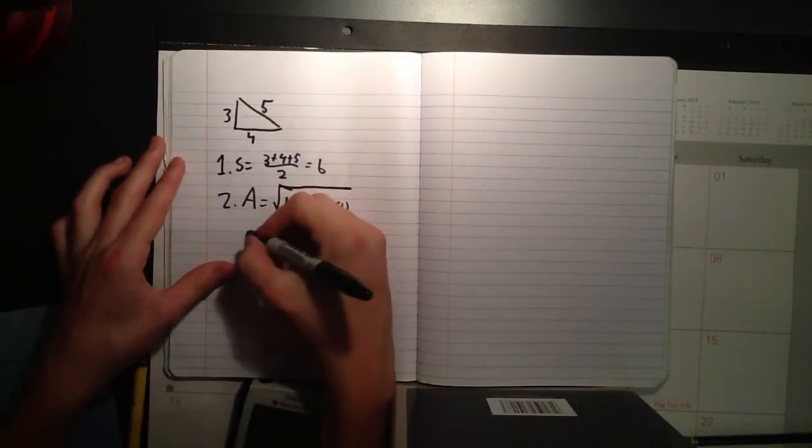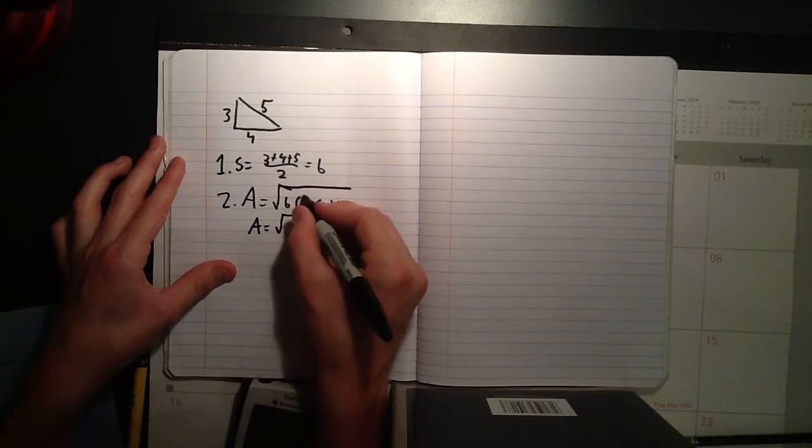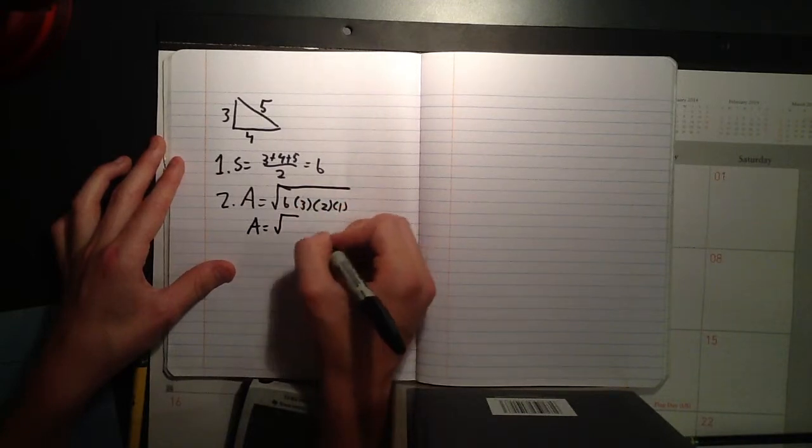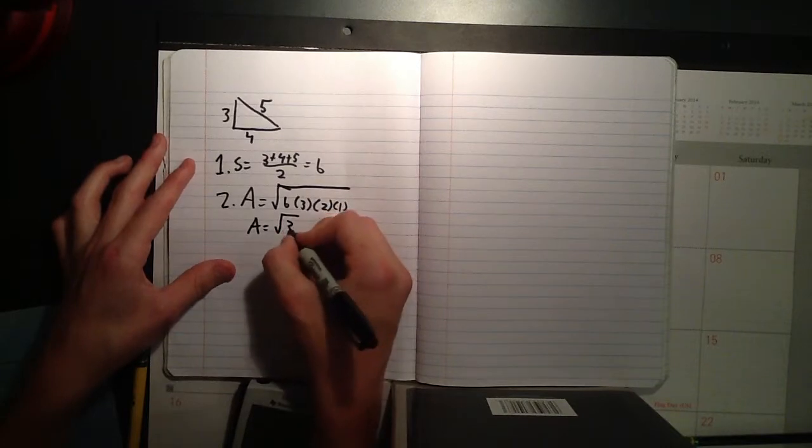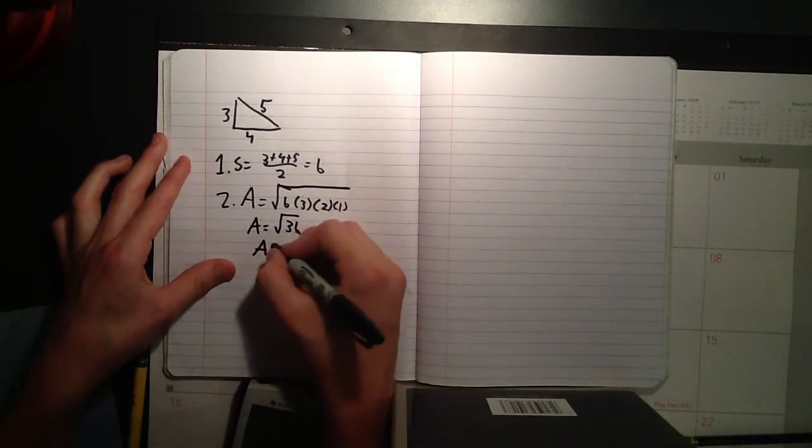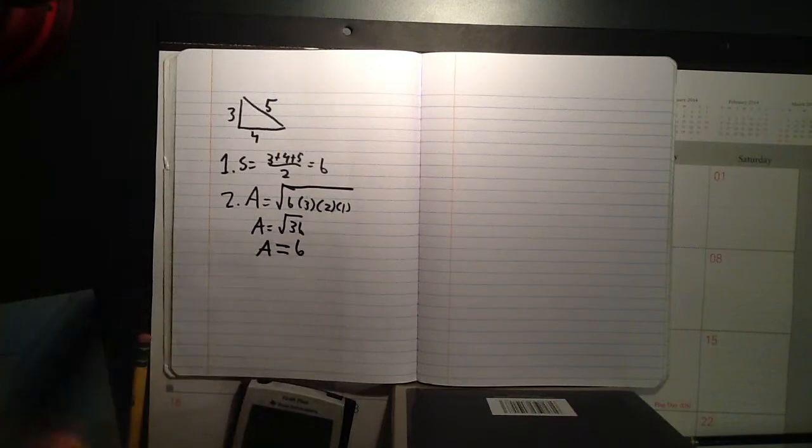So, we have a equals root... We don't even care about that. So, we'll have a equals root six times six, which is thirty-six. A equals six. There you go!